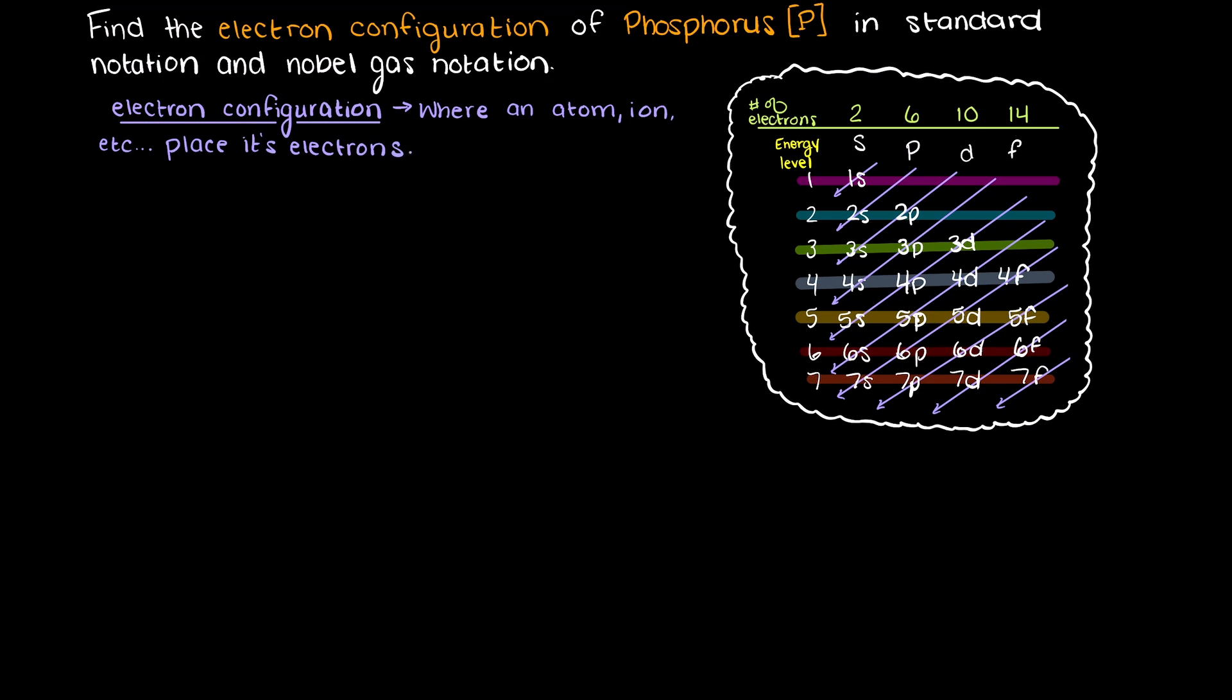When finding the electron configuration of an atom, we are being asked where does this atom place all of its electrons, i.e. what shells and orbitals are its electrons most likely to be found. So, to solve this, the first thing we need to do is look at our periodic table and see how many electrons our phosphorus atom actually has.